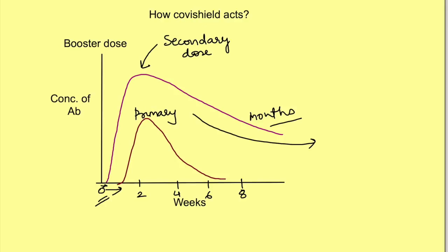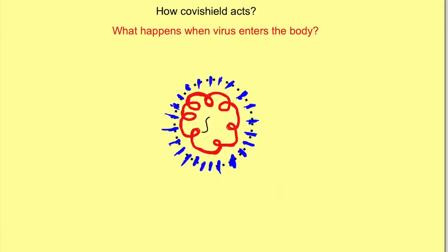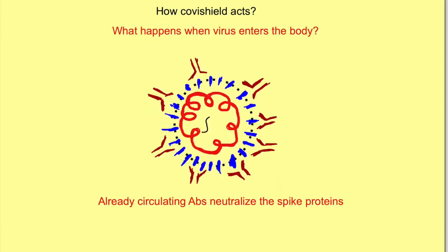Now, if coronavirus enters into the body, what will be the response? If antibodies are already present in the body because of the secondary response, these antibodies will go and attach to the spike proteins at the first site of the virus — which they had already recognized before — and prevent the virus from attaching to the cell. This is known as neutralization, where antibodies bind with the active component of the pathogen and prevent it from entering the cell.